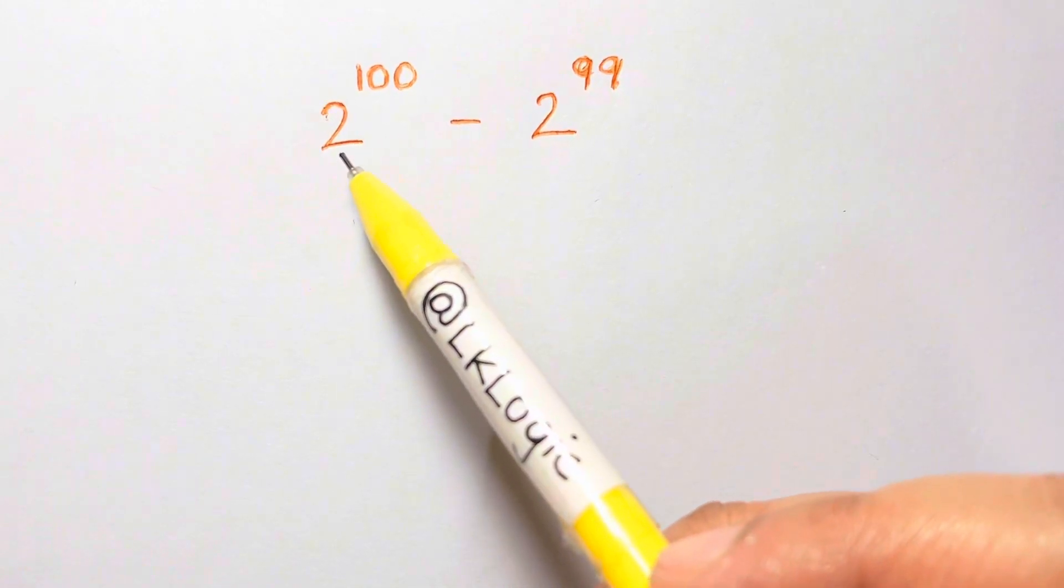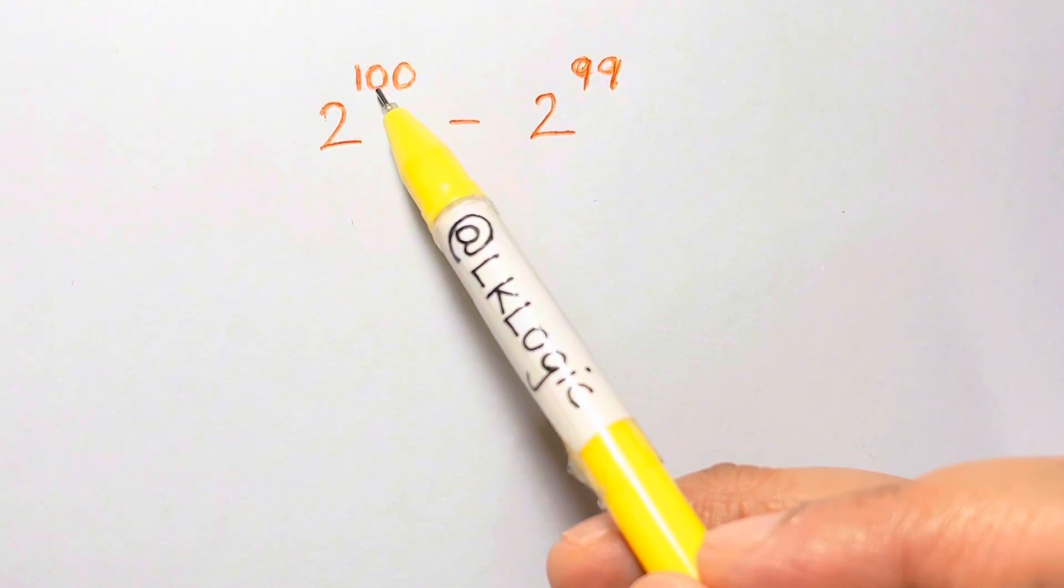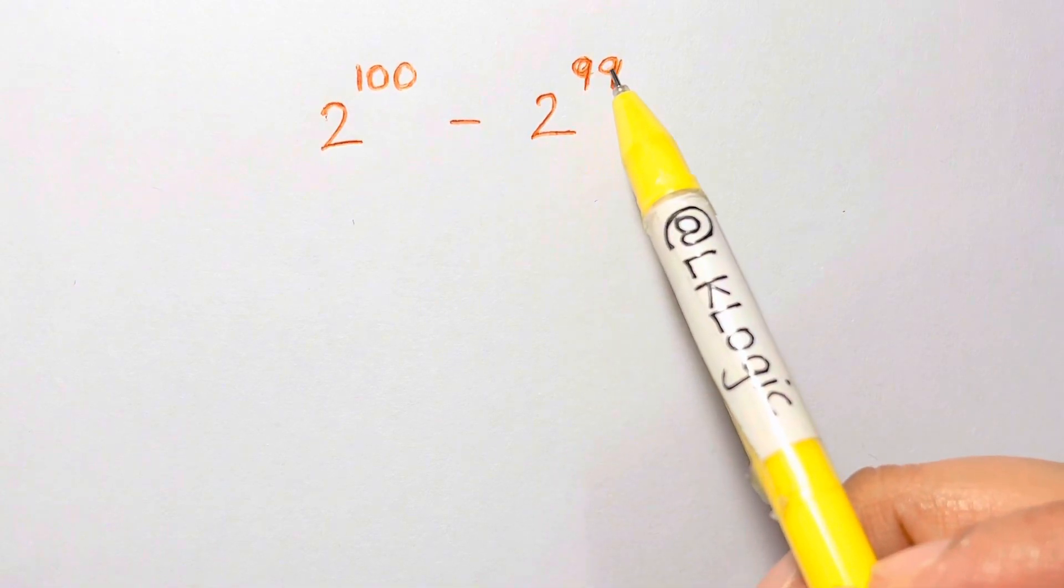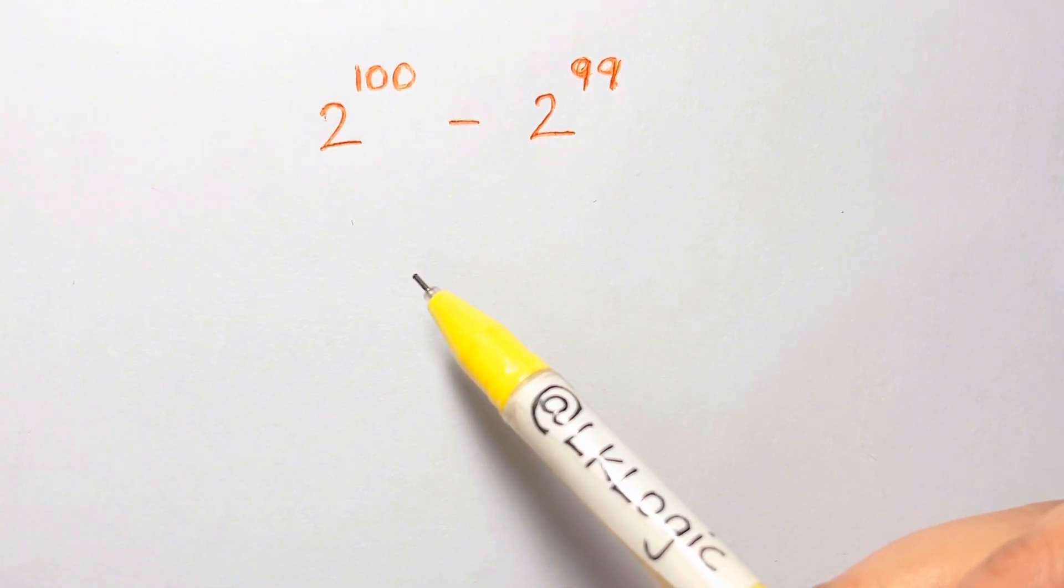Hi guys, I have a very nice problem for you all here. 2 to the power of 100 minus 2 to the power of 99 equals what? Now you don't have to panic.